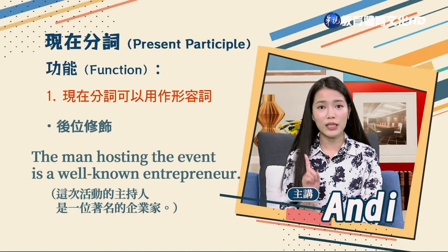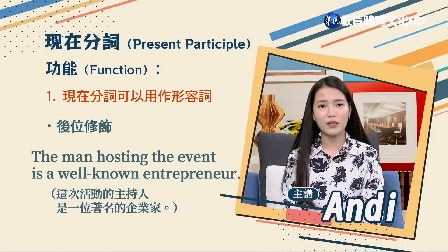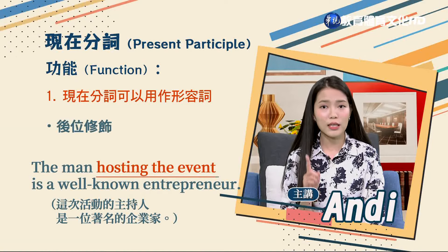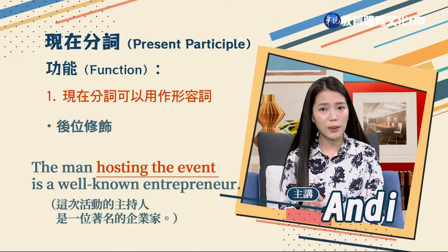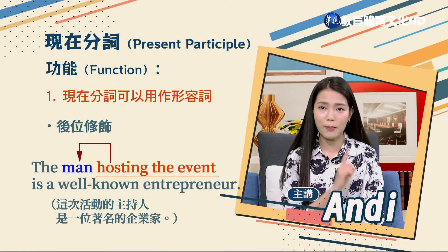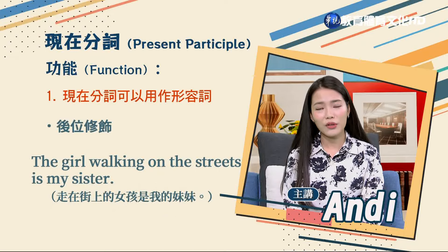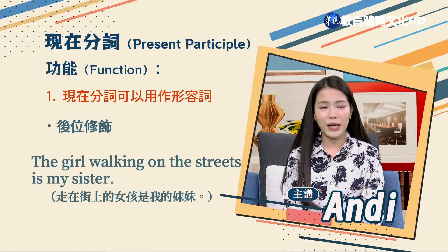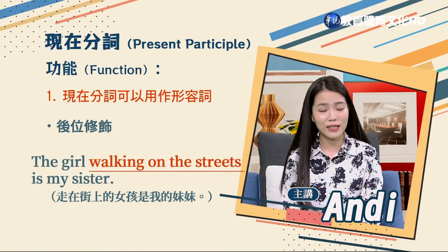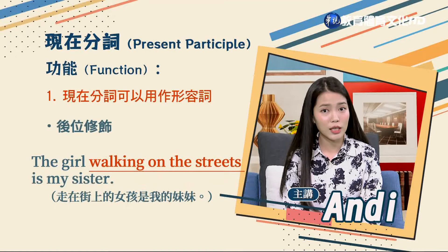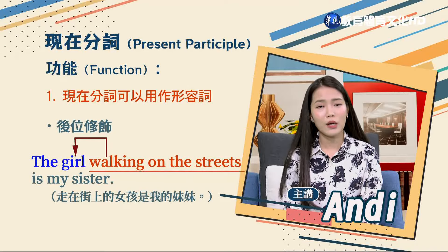接著來看後位修飾。例句：「The man hosting the event is a well-known entrepreneur.」這次活動的主持人是一位著名的企業家。這裡hosting是現在分詞，hosting the event是現在分詞片語，做形容詞去修飾名詞man。「The girl walking on the street is my sister.」走在街上的女孩是我的妹妹，walking on the street是現在分詞片語，修飾the girl。